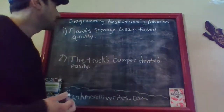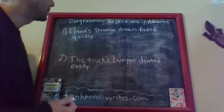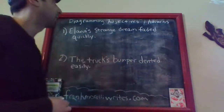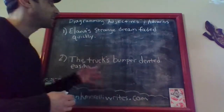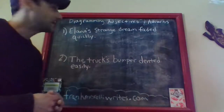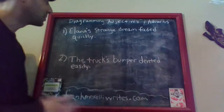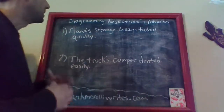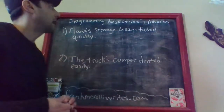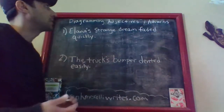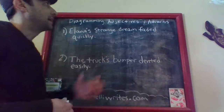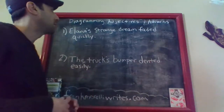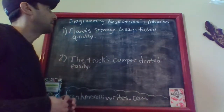In the last video I did, which was about diagramming indirect objects, I talked a little bit about how to diagram adjectives because there were some articles in some of the sentences I used — words like 'the,' 'a,' and 'an.' But in the case of these sentences, there are actual adjectives and actual adverbs, and we're going to see how they are used and also how they are diagrammed.